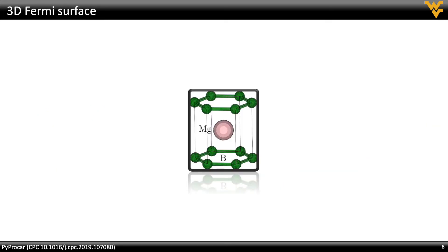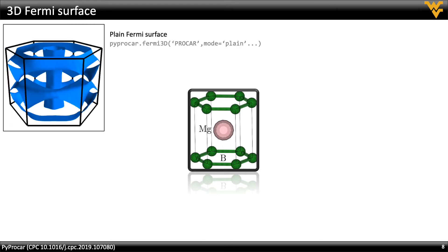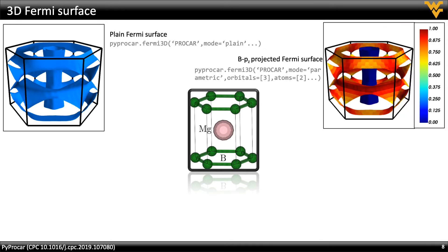The Fermi surface of a material contains a plethora of information crucial to understanding its thermal, electronic, and magnetic properties. Similar to band structures, PyProCar is able to plot both plane and projected Fermi surfaces as seen here for the material magnesium diboride.